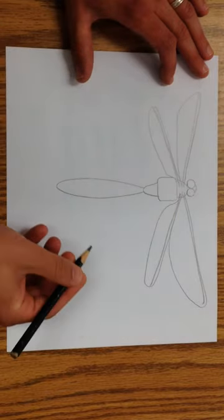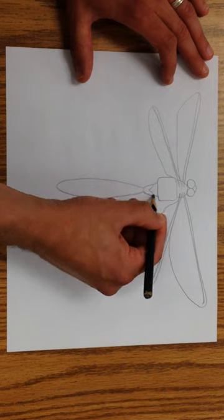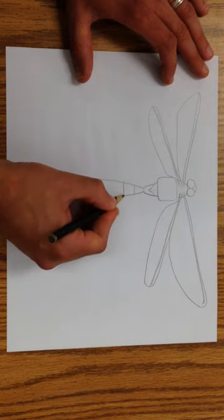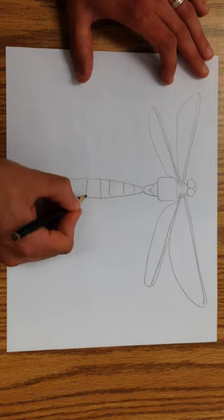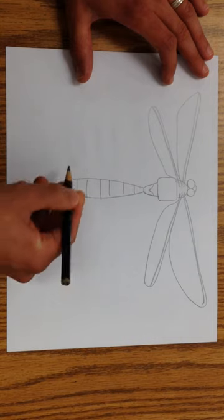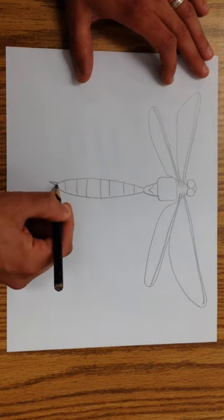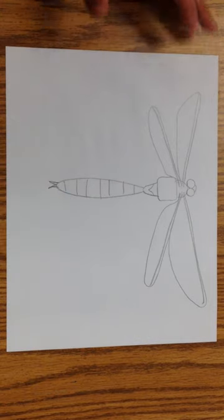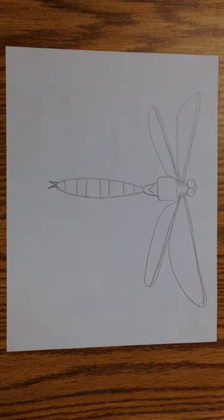Finally, the markings on the rest of the body. Make a little V here, some segments here on the abdomen, and a little W down here at the bottom. And there's your dragonfly.